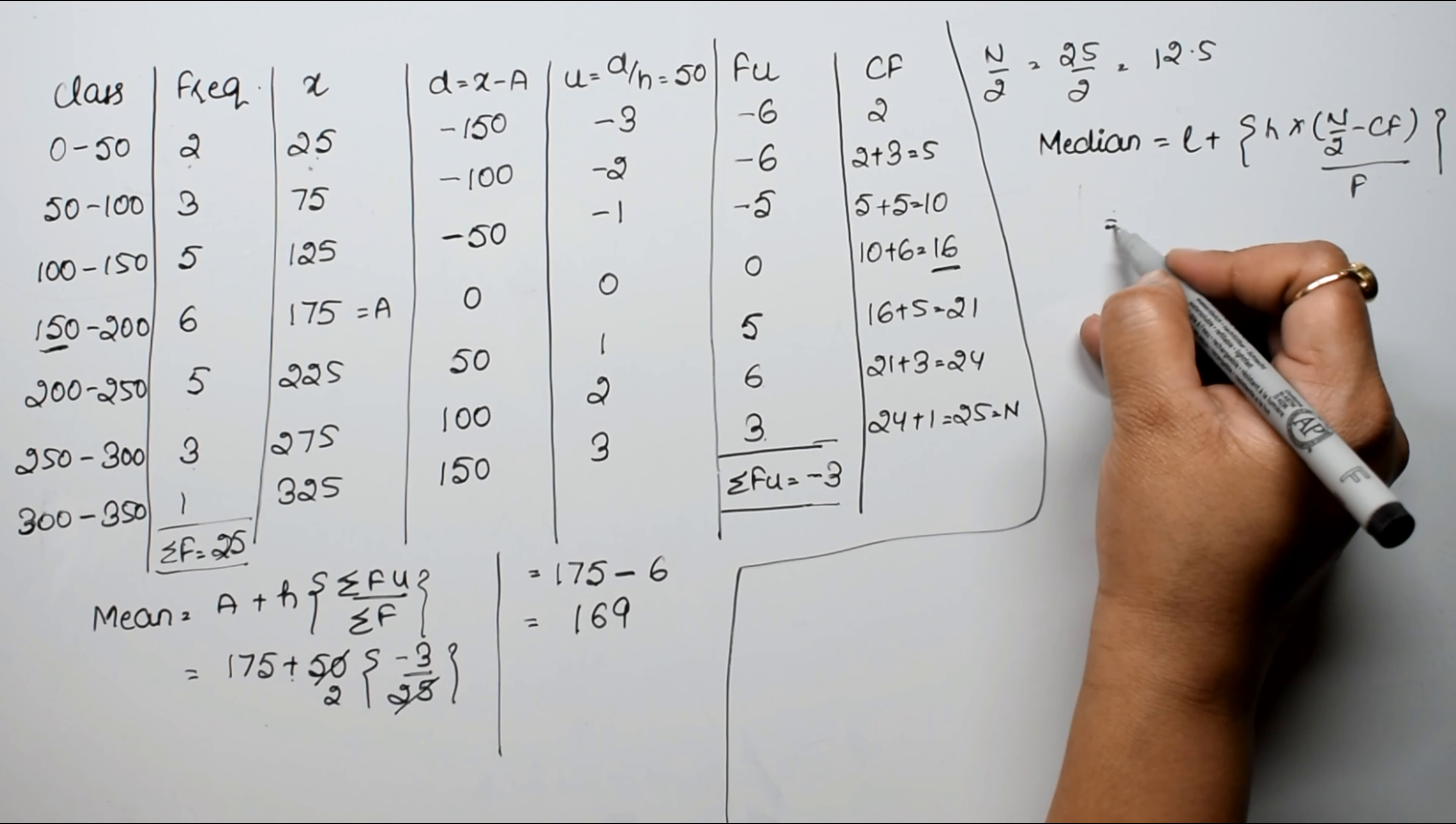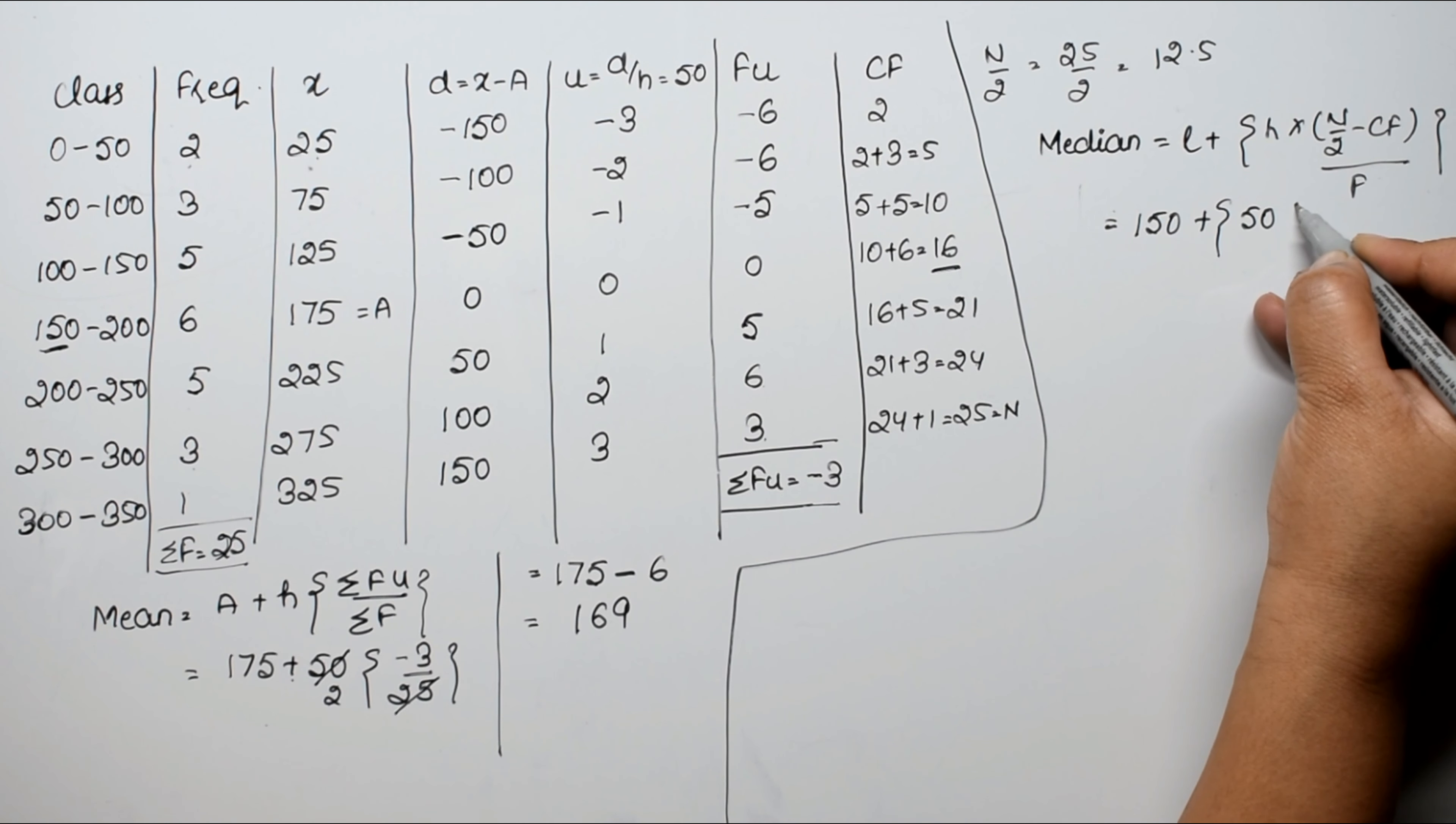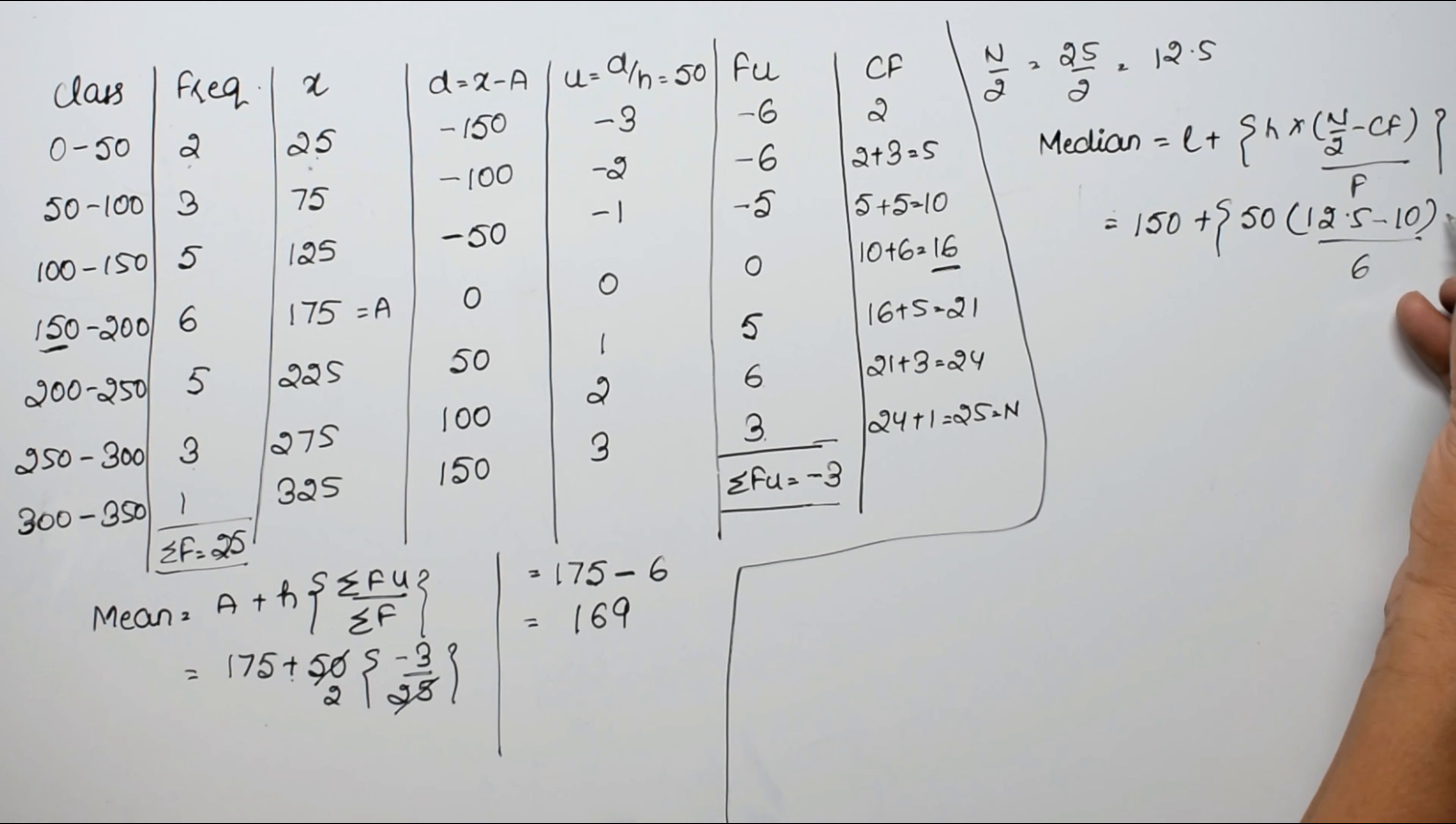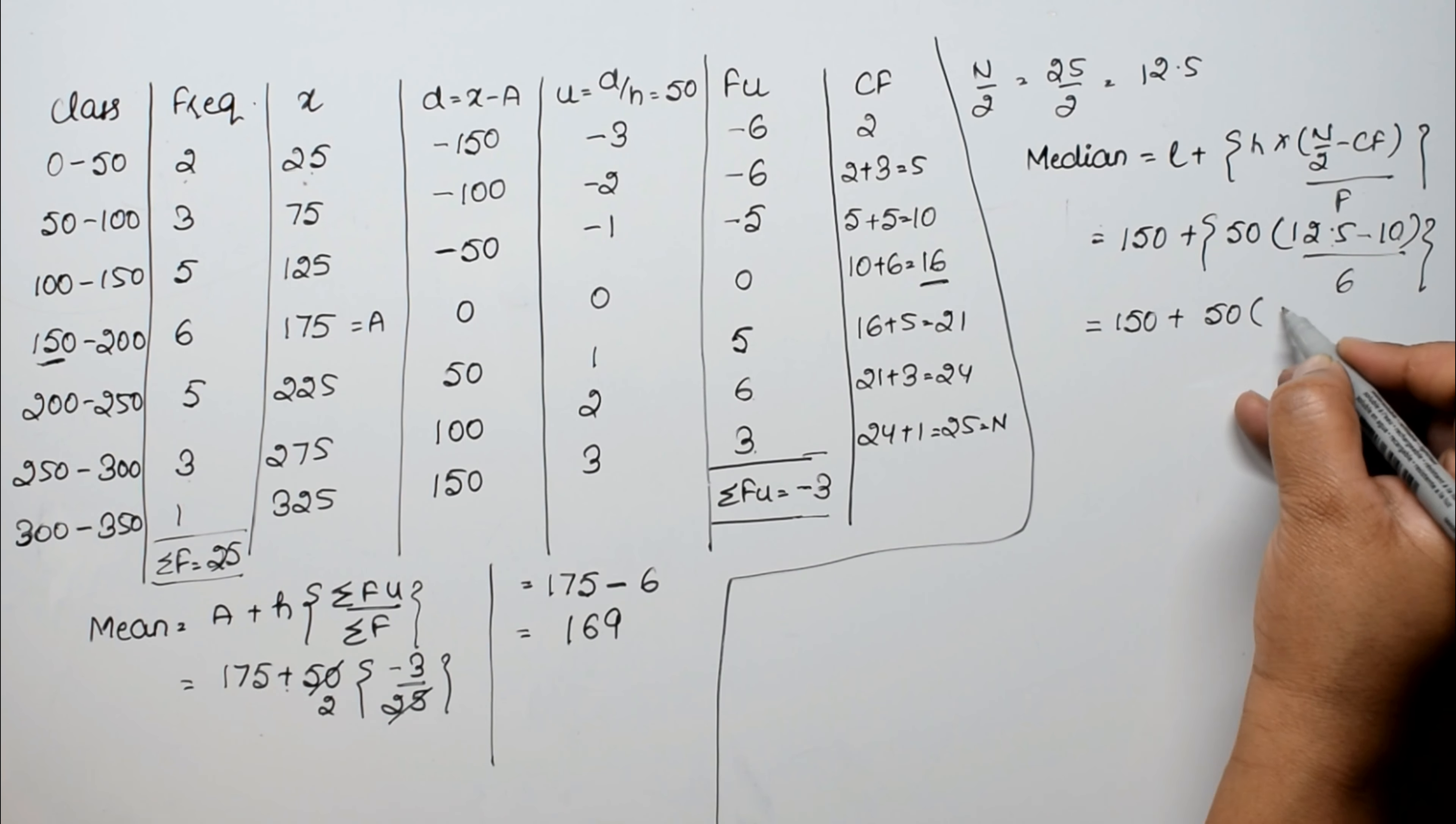Now write its values. l is 150 plus h is the difference between these two, that is 50, into n by 2 is 12.5, and cumulative frequency is 10, and frequency is 6. So here we have 6. Now see ahead, 150 plus 50 into, this is 2.5 upon 6, right?